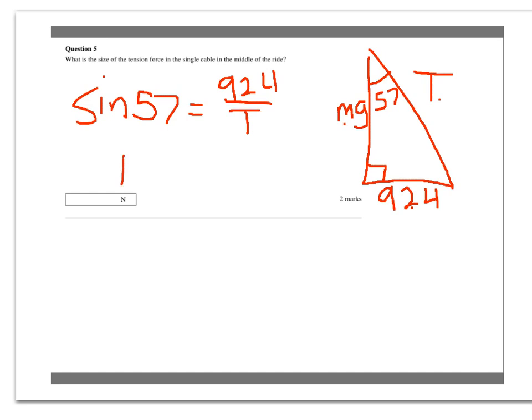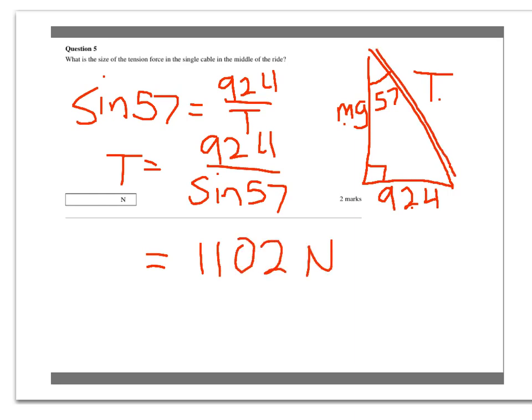So, T will be equal to 924 over the sine of 57. And so, the tension force is 1,102 newtons. That's the tension along here in the ride.